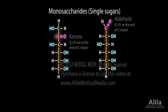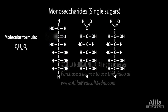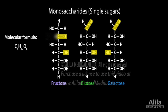Some monosaccharides share the same molecular formula, but are different in structure due to different positions of atoms. These seemingly small structural details result in completely different sugars, with different properties and metabolism pathways.